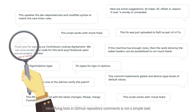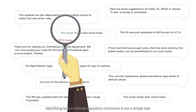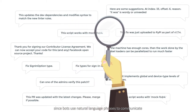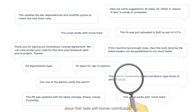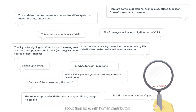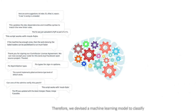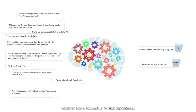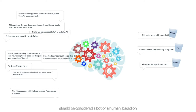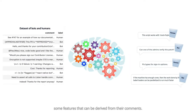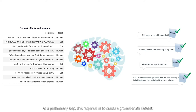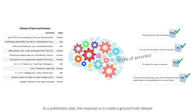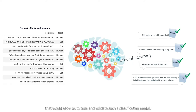Identifying bots in GitHub repository comments is not a simple task, since bots use natural language phrases to communicate about their tasks with human contributors. Therefore, we devised a machine learning model to classify whether active accounts in GitHub repositories should be considered a bot or a human, based on features that can be derived from their comments. As a preliminary step, this required us to create a ground truth dataset to train and validate such a classification model.